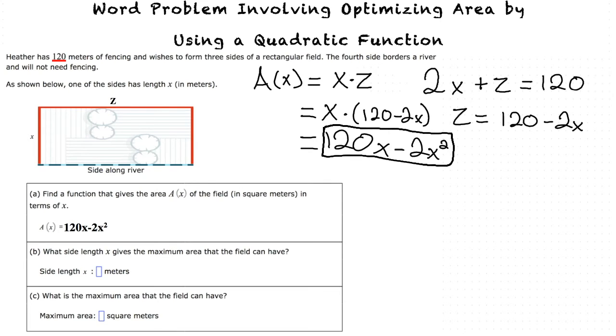If we were to graph the equation 120x minus 2x squared, we would get a parabola. And to find the highest point of a parabola, we need to solve for its vertex. How do we know that the equation is going to be a parabola? 120x minus 2x squared is a quadratic function and all quadratic functions appear on graphs as parabolas.